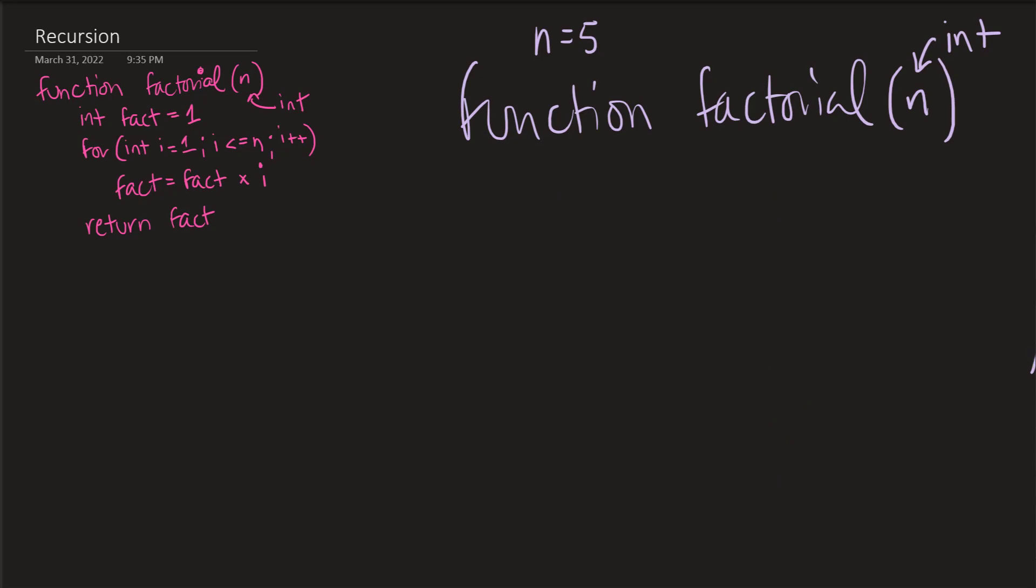You can tell the function when to stop by using something called the base case. And this is your most basic instruction. For us, it's going to be the end of the countdown. So once this thing hits one, we want it to return one. So at the top, we can just say if n is equal to one, then return one.